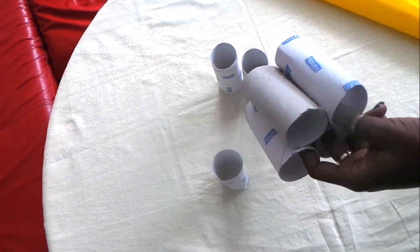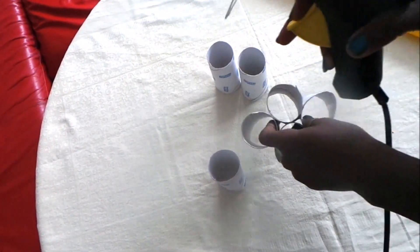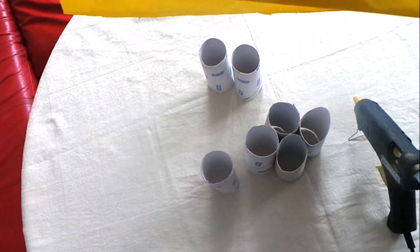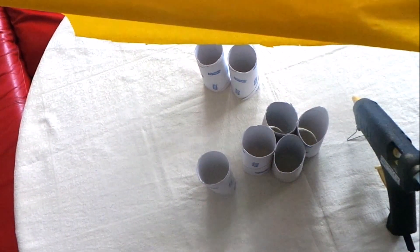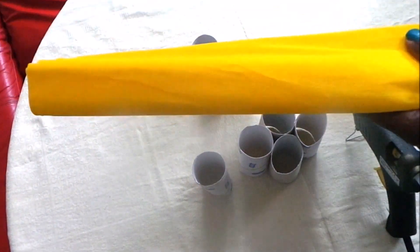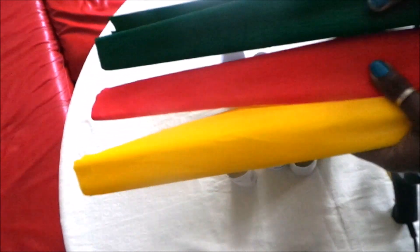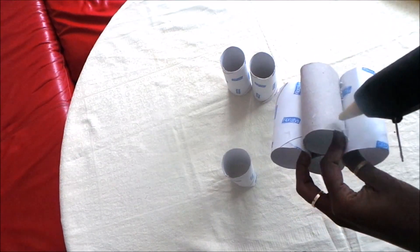What you need is a glue gun and these bleeding papers, they're called bleeding papers or crepe papers. I chose these colors and you put them all over here.